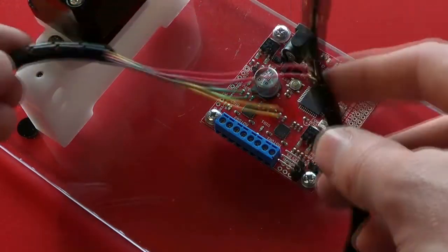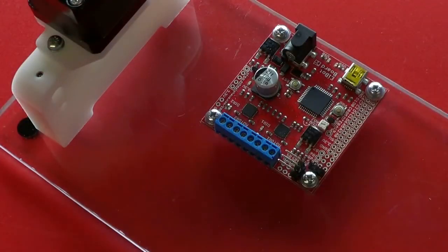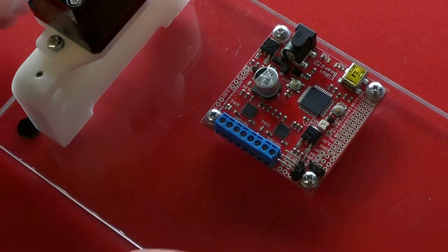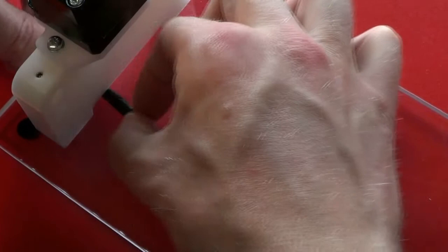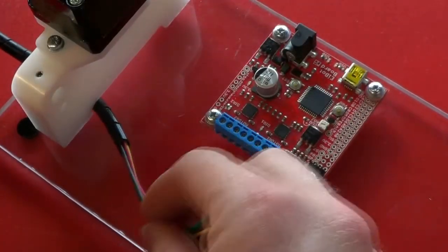First, we'll connect the Y motor cable. That's the longer of the two. So pass the wires underneath the left-hand X support and pull through a little bit of the spiral wrap.